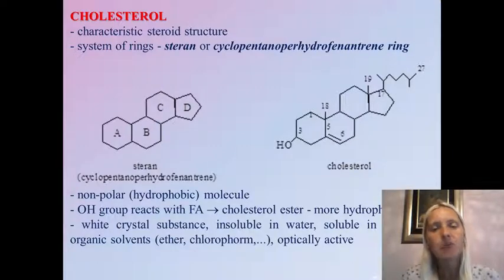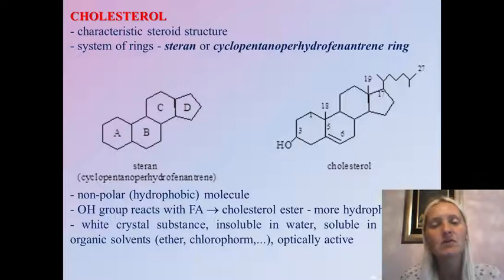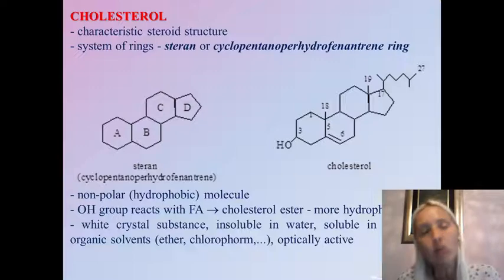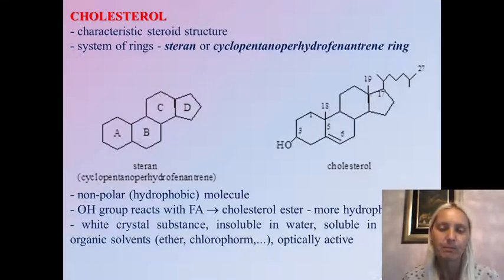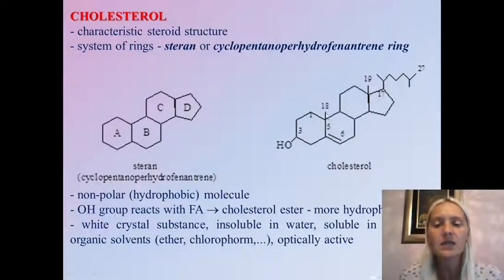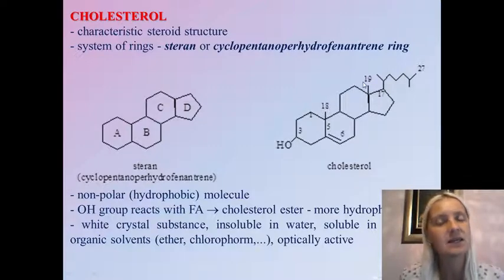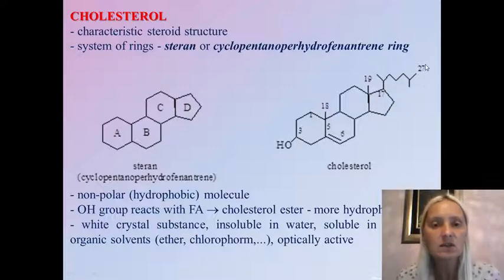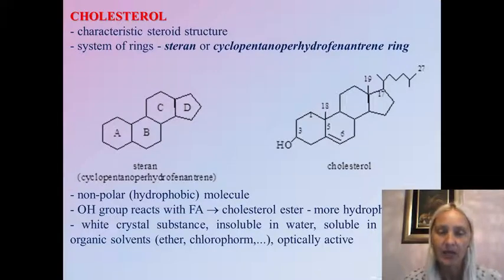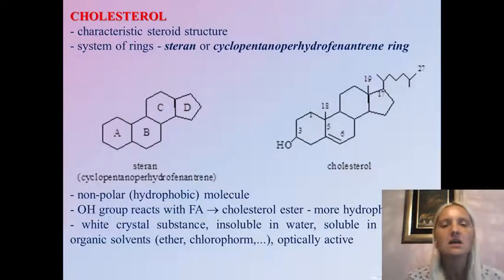Moreover, predominantly two-thirds of cholesterol in our blood are additionally esterified — this OH group is esterified with fatty acids, and cholesterol esters are even more hydrophobic molecules than cholesterol itself. We also have a double bond at position number 5. At positions 10 and 13, we have additional methyl groups attached, marked with numbers 18 and 19. At position number 17, there is a hydrocarbon chain. In total, the number of carbon atoms in the molecule of cholesterol is 27. Cholesterol is considered to be a white crystalline substance, insoluble in water, soluble in nonpolar solvents, and an optically active molecule.